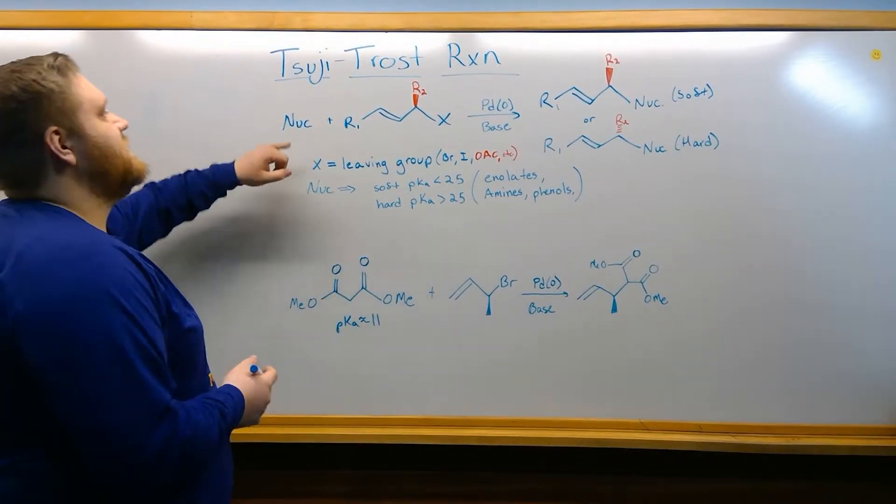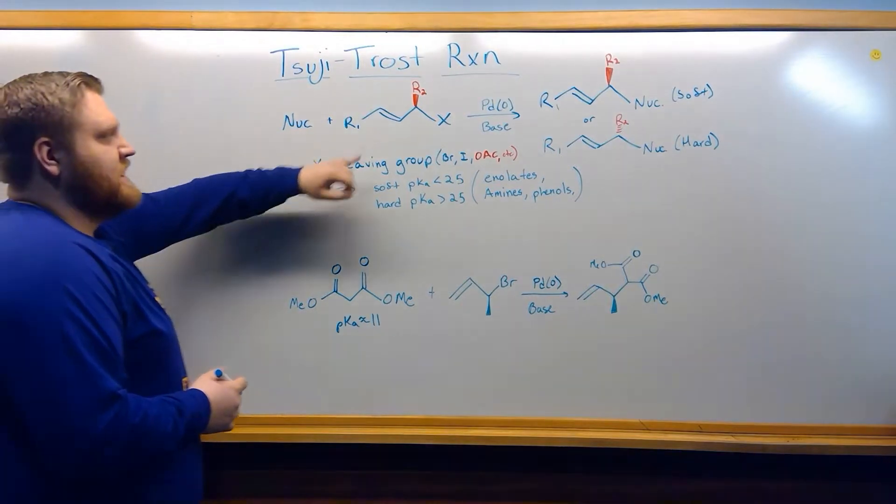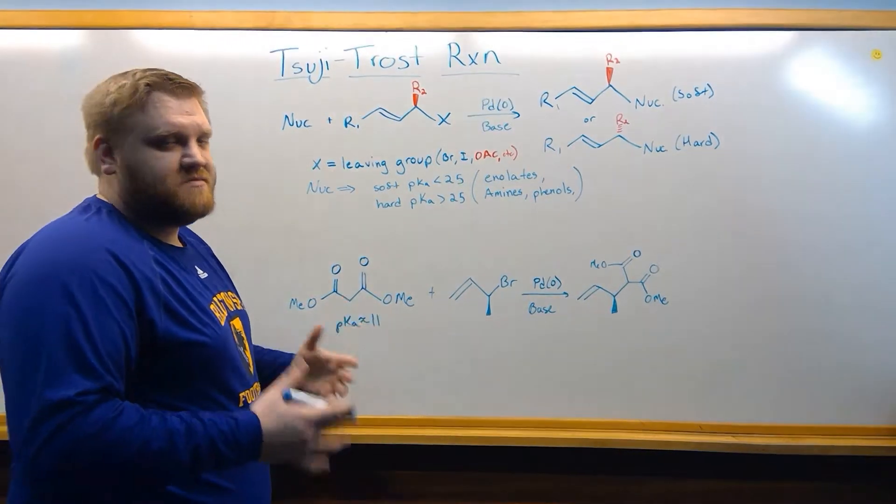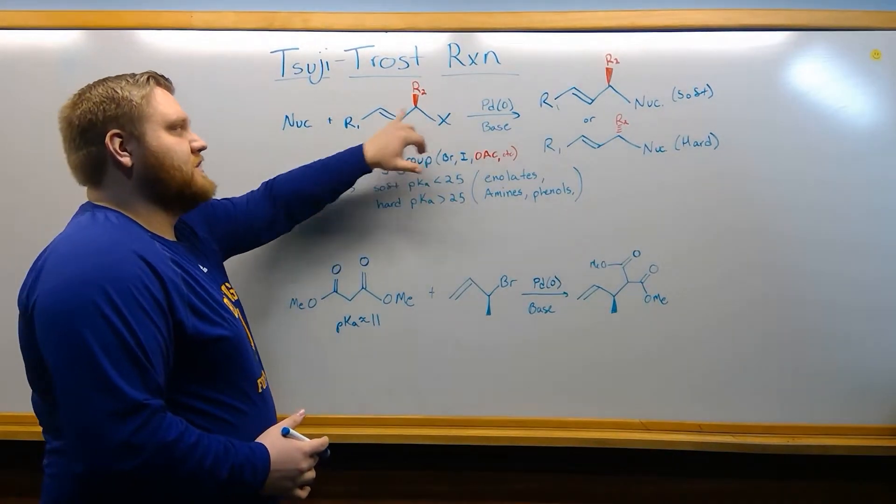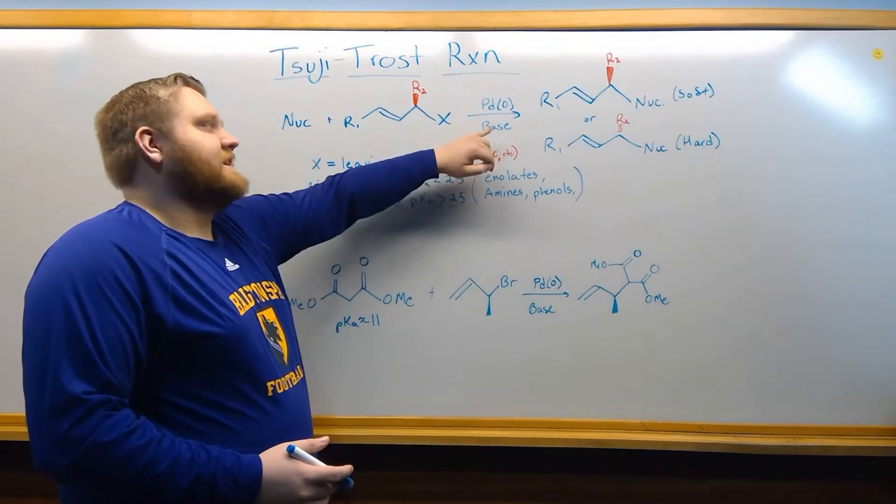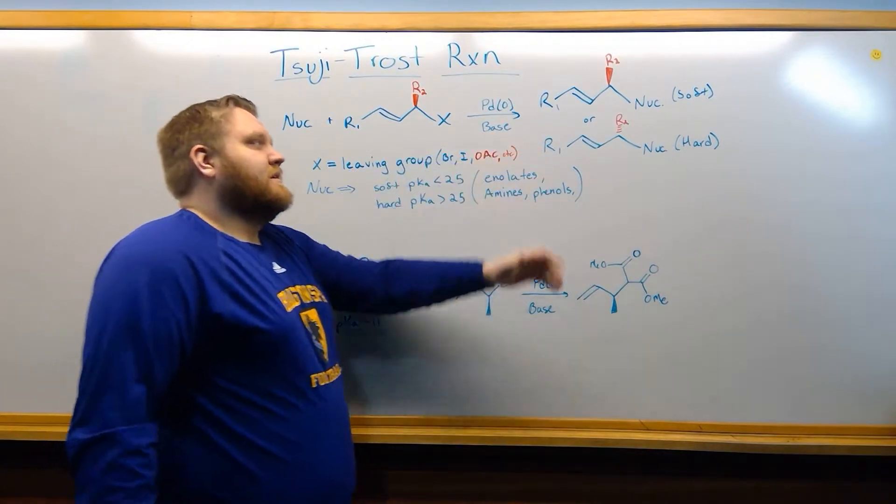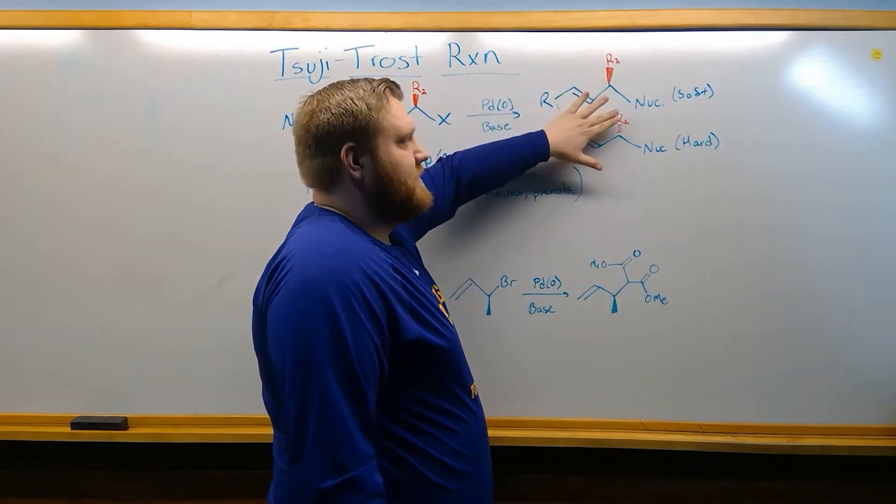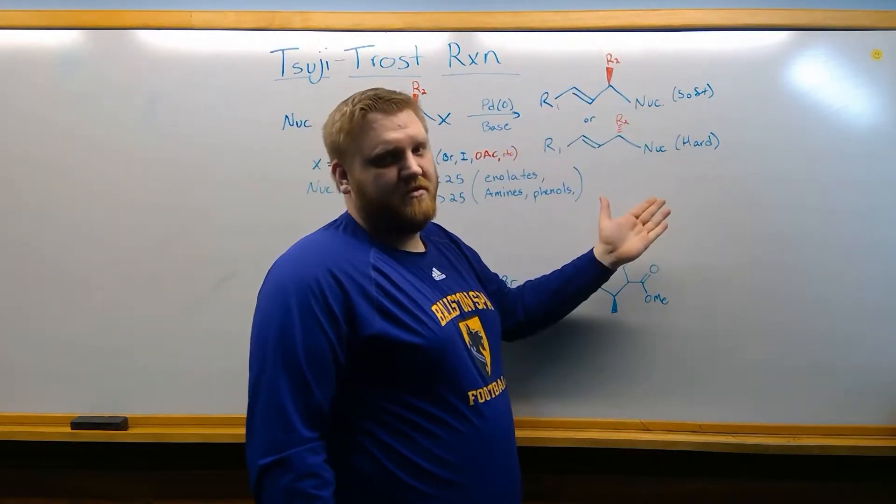The Tsuji-Trost involves the connection of a nucleophile and an allylic compound, where these R-groups could just be hydrogens, but the important thing is we have a leaving group one carbon away from our double bond. We have a palladium catalyst, and it's usually under basic conditions, and we can either get substitution retaining stereochemistry or inverting stereochemistry, depending on our nucleophile.